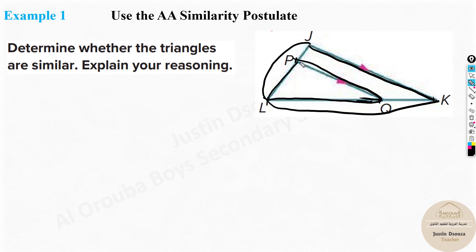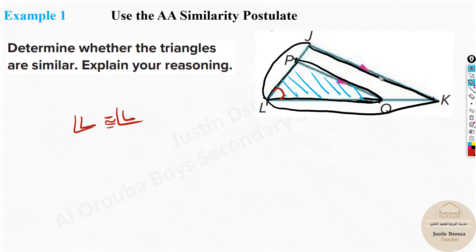Looking at the inner triangle shaded in blue and the outer triangle as the entire figure: angle L is the same for both triangles. So angle JLK is congruent to angle PLQ - that's one pair. Now, there is a symbol shown indicating parallel lines. When you have a transversal crossing two parallel lines, corresponding angles are equal.